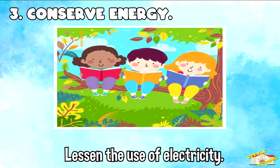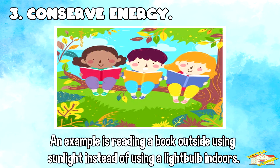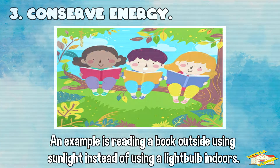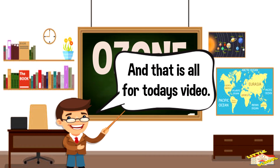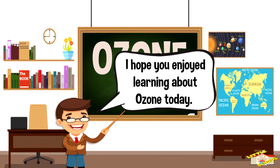Conserve energy — lessen the use of electricity. An example is reading a book outside using sunlight instead of using a light bulb indoors. And that is all for today's video. I hope you enjoyed learning about ozone today!